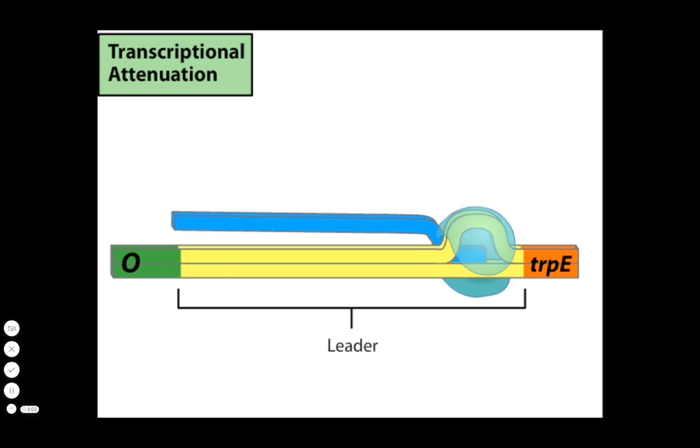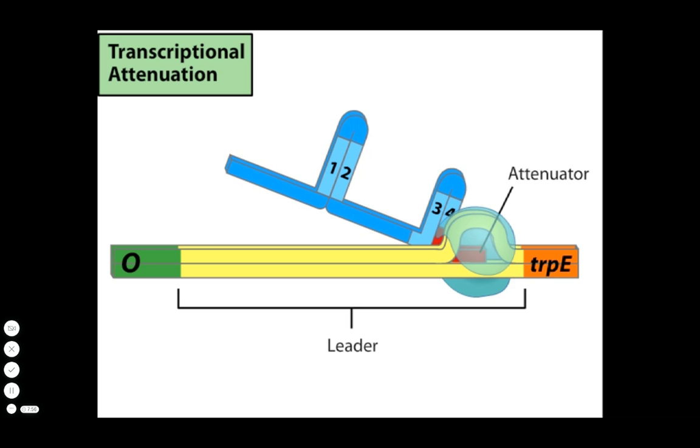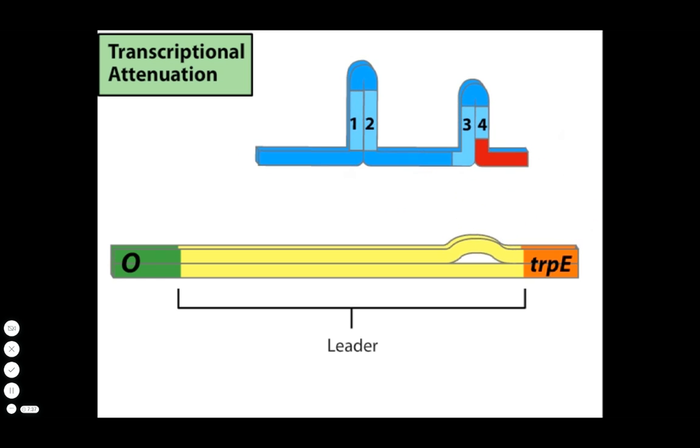When 3 and 4 pair, RNA polymerase pauses. A newly transcribed RNA region called the attenuator remains paired with its complementary DNA in the transcription bubble. However, the attenuator is rich in the base uracil, which means that the paired RNA and DNA are attached by relatively few hydrogen bonds. The attenuator easily separates from the DNA and RNA polymerase falls off before reading trpE or the other structural genes.